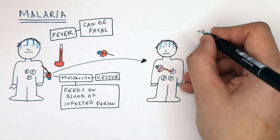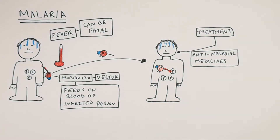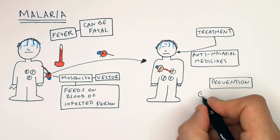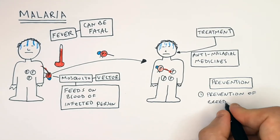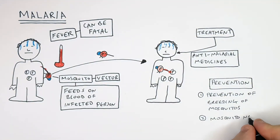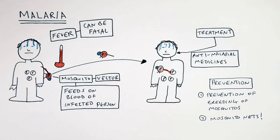The treatment for malaria is firstly anti-malaria drugs — drugs that will destroy the protist plasmodium. Malaria can also be prevented from spreading. You can destroy the breeding grounds of the mosquitoes, or you can use mosquito nets. Mosquito nets prevent mosquitoes from landing on you, therefore lowering the risk of transmission of malaria.